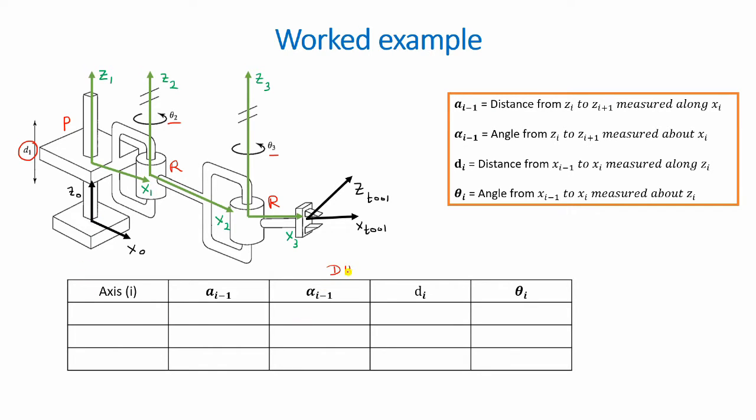Now, this would be our DH table. And the first step would be to identify the axis. So we have three axes, 1, 2, 3, corresponding to our three joints. However, when setting the parameters for the DH table, we would always move from one frame to another. So in the first case, we will move from 0 to 1, then from 1 to 2, and 2 to 3.